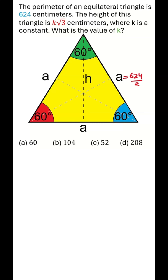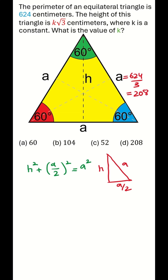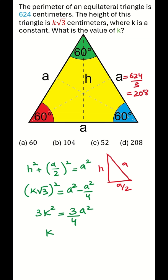If the perimeter of an equilateral triangle is 624 centimeters and the height of this triangle is K times square root 3, we can calculate the value of K by first figuring out the length of the side of the triangle and then applying the Pythagorean theorem on one of the right angle triangles to solve for K.